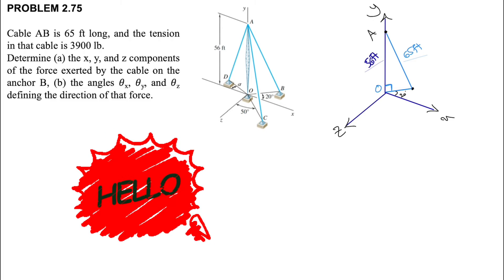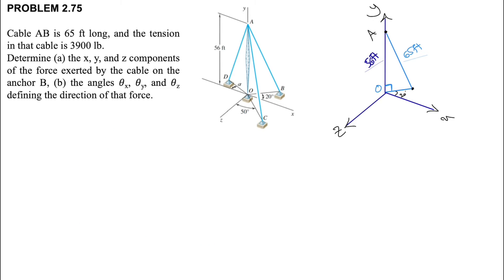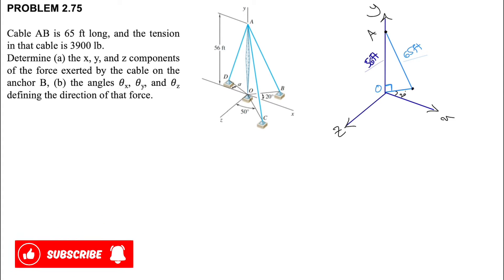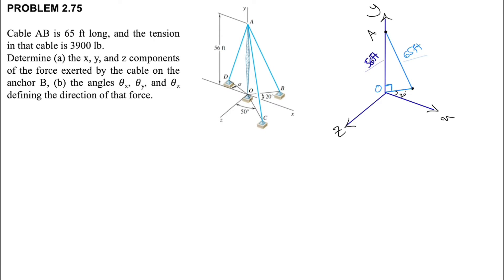Welcome back. In this question we have cable AB that is 65 feet long and the tension in the cable is 3900 pounds. In part A we need to determine the x, y, z components of the force exerted by the cable on anchor B, and in part B we need to find the angles with the x, y, z axes which define the direction of the force. We're going to start with the forces applying at point B.